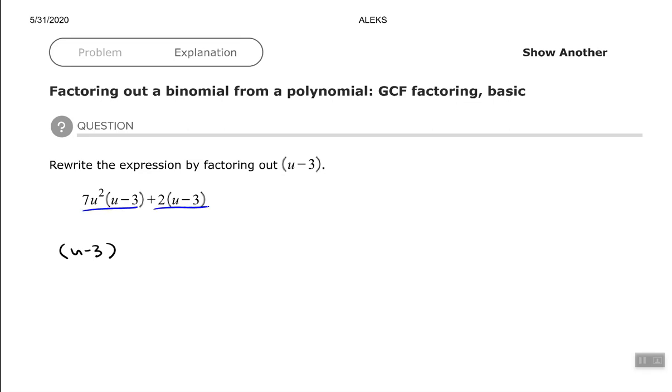If I divide by u minus 3, let's see what we have left over to go in the other set of the parentheses. The u minus 3s will cancel. And you see that we have 7u squared plus 2 remaining. And they go together in the other set of parentheses.